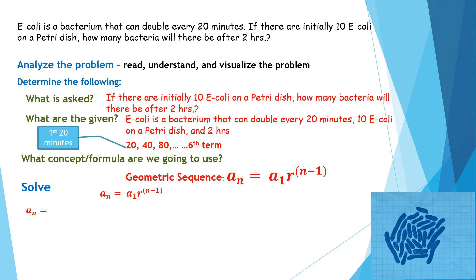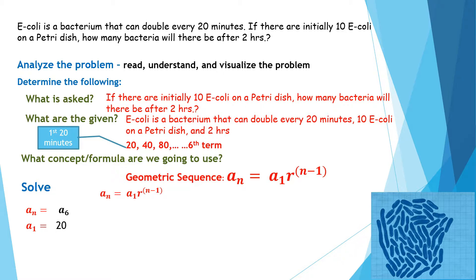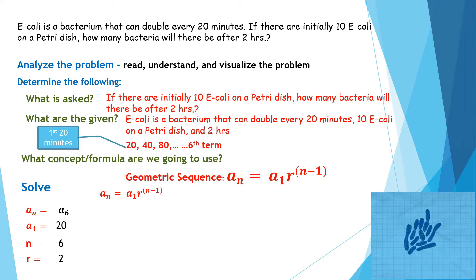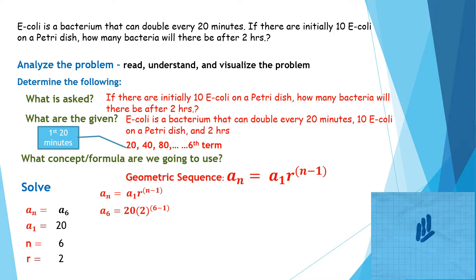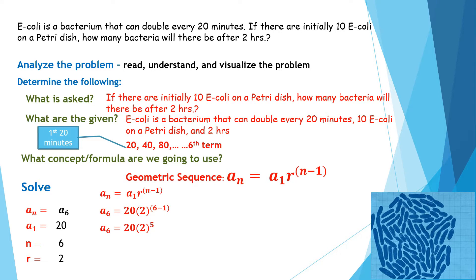Identifying the variables: a_n is a_6 since we are looking for the sixth term; a_1 = 20; n = 6; and the common ratio r = 2. We now replace the variables in the formula with these values, giving us a_6 = 20 × 2^(6−1).